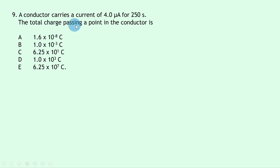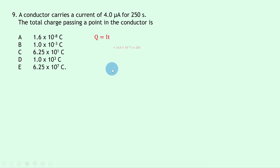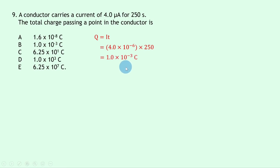Question 9: a conductor carries a current of 4.0 microamps for 250 seconds. Using Q = IT, we substitute 4.0 × 10⁻⁶ A times 250 s to get 1.0 × 10⁻³ coulombs. The answer is B.